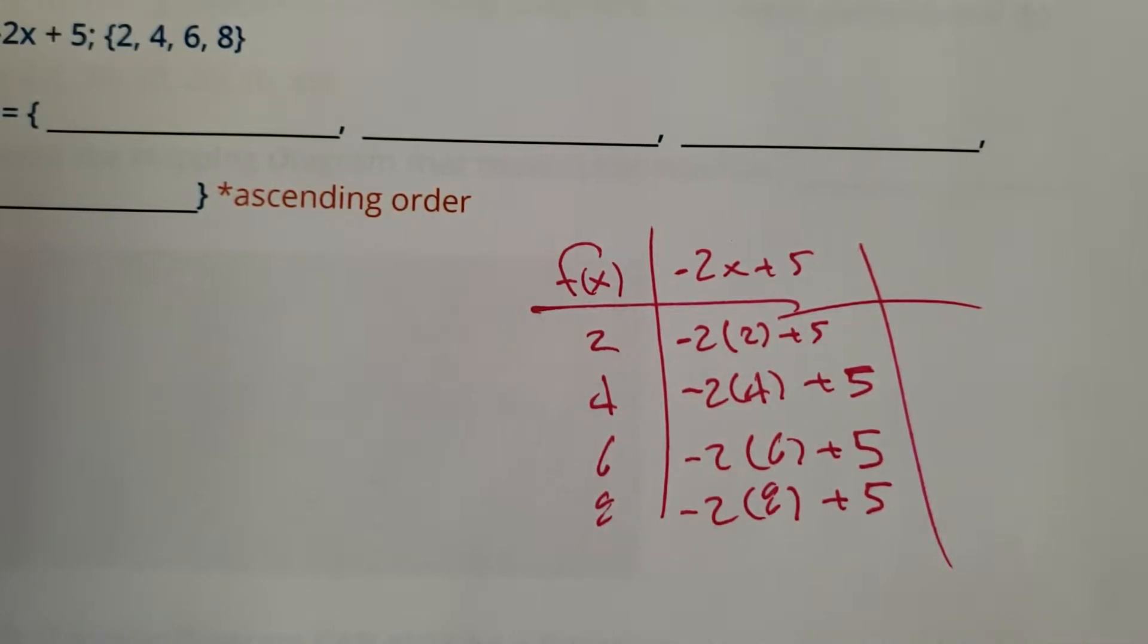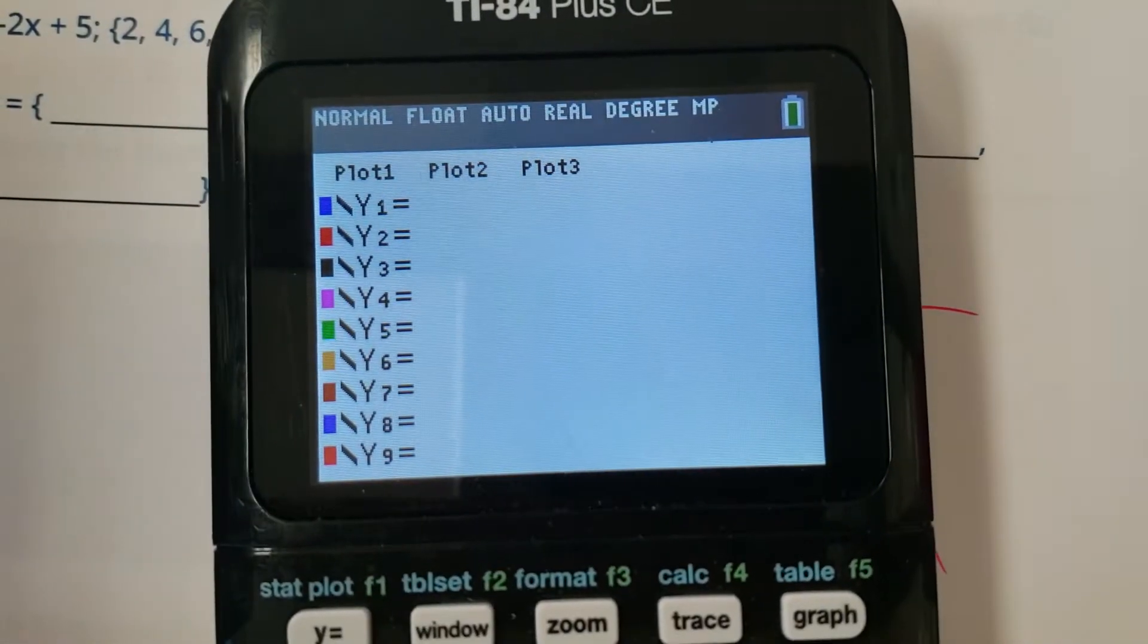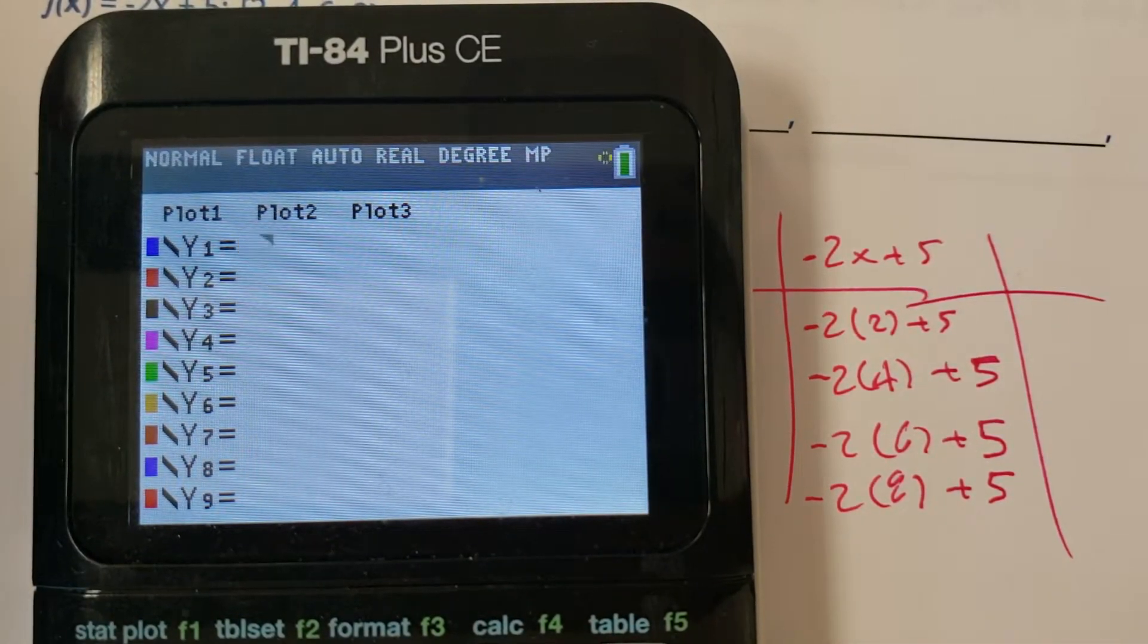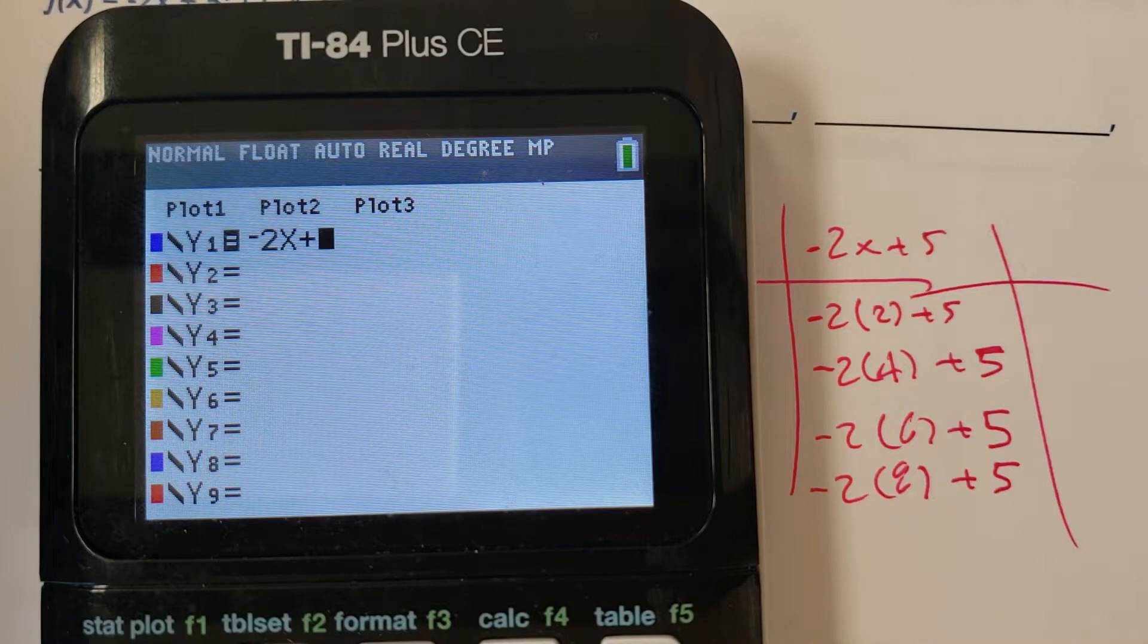the other thing you can do is if you are very good at your calculator skills, which hopefully you are, you are in a math class, is that you can type in the function 2x plus 5 and then you can go to the table